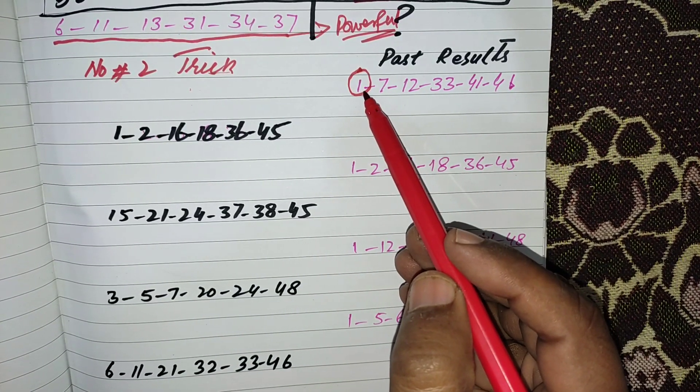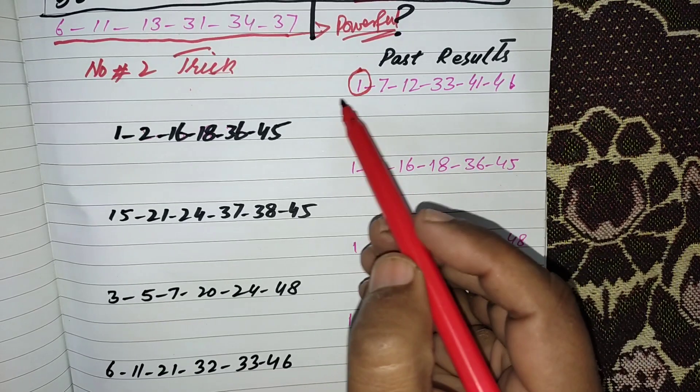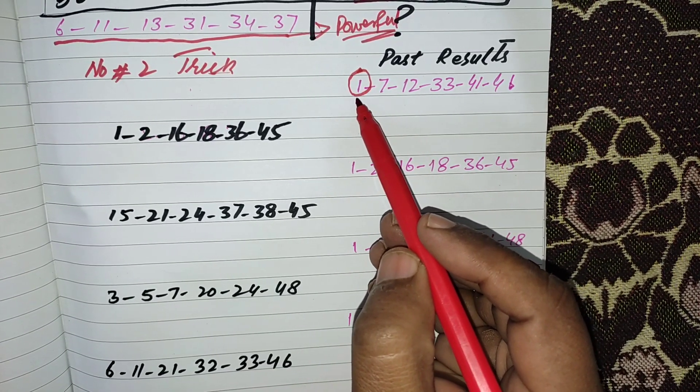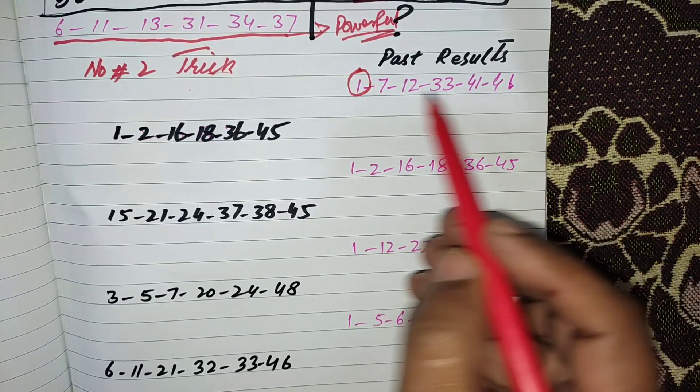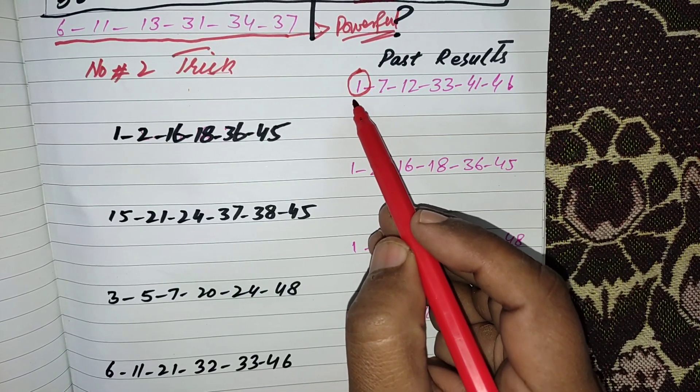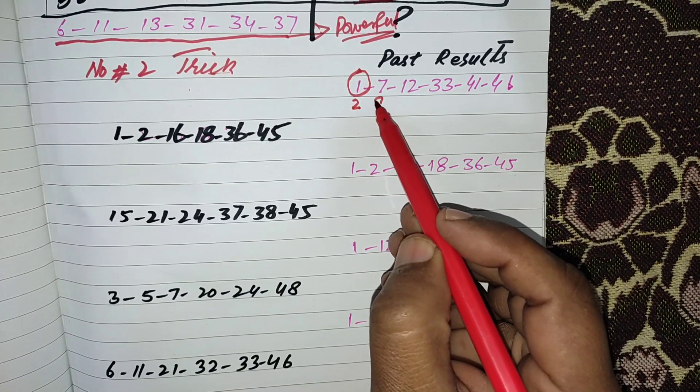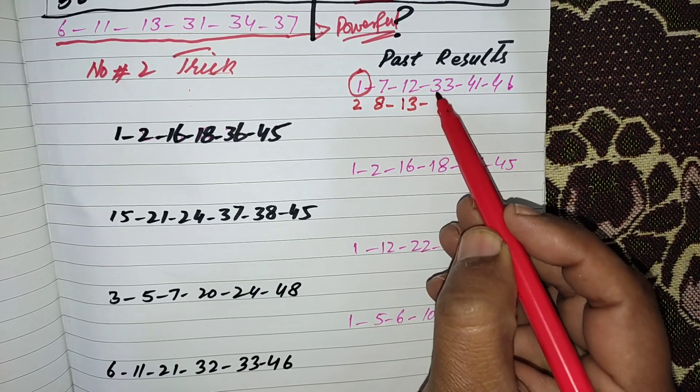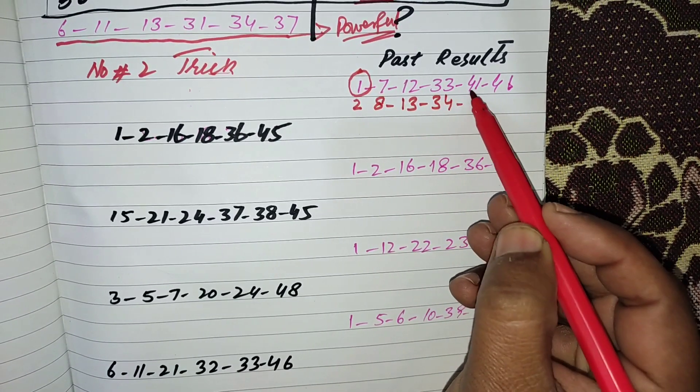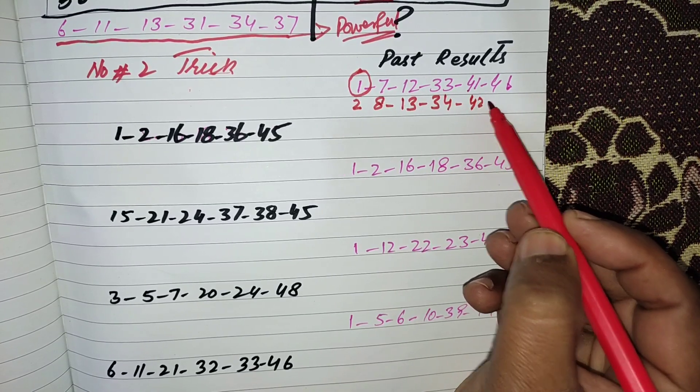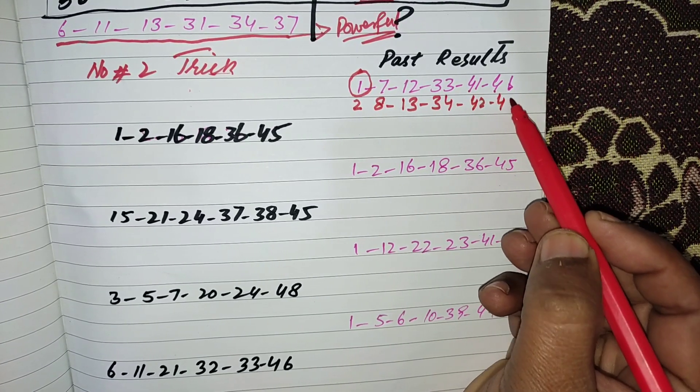When the one number came as the first number, then you increase one time from every number like that: 1, 2, 7, 8, 12, 13, 33, 34, 41, 42, and 46, 47.